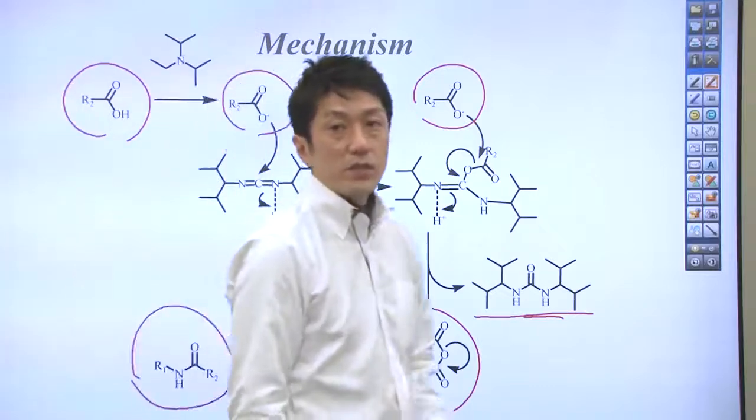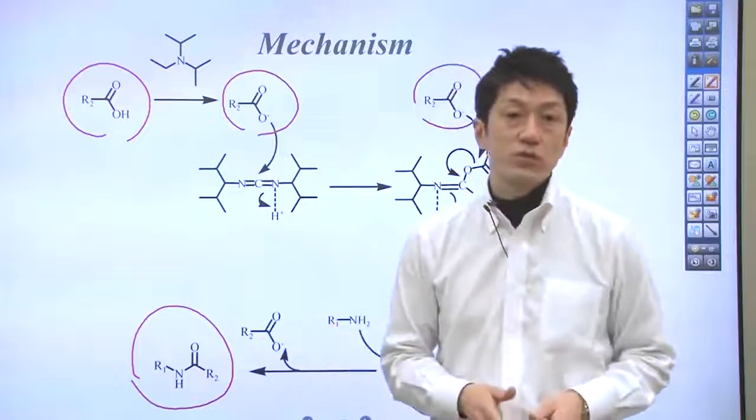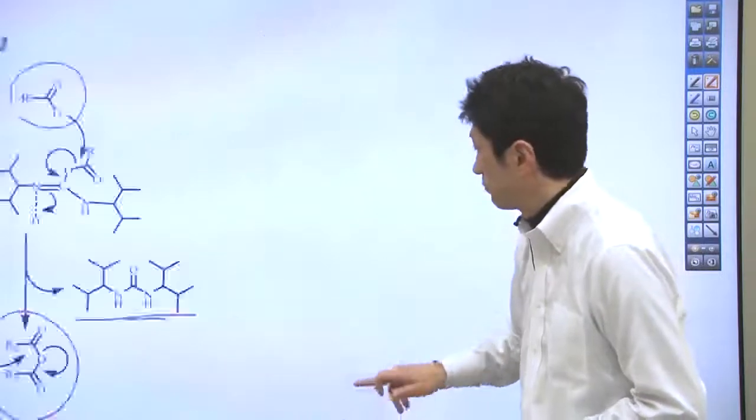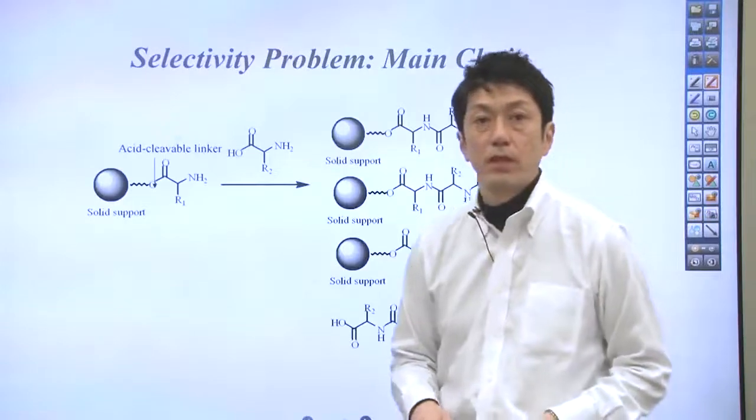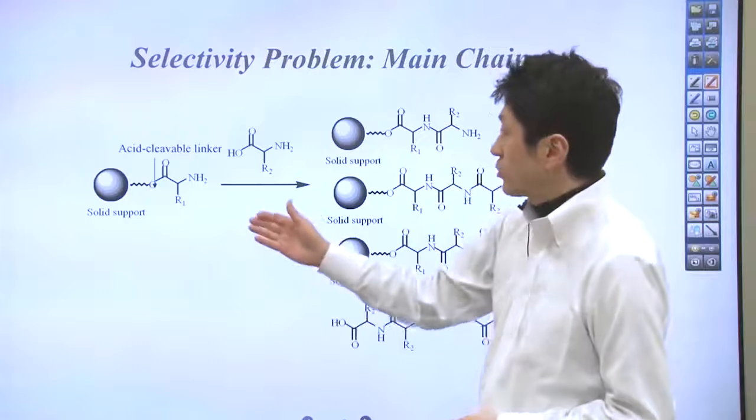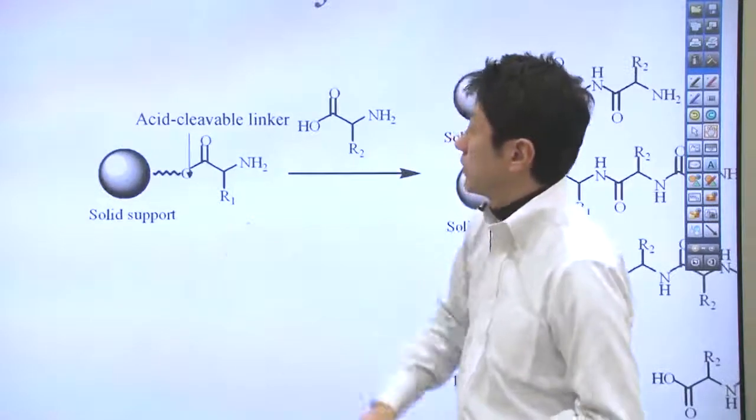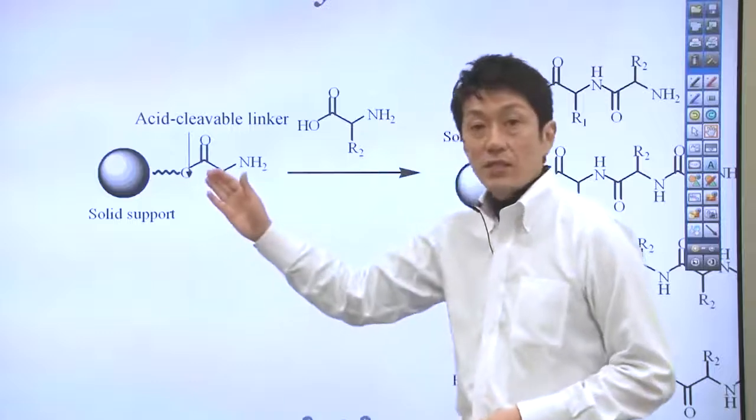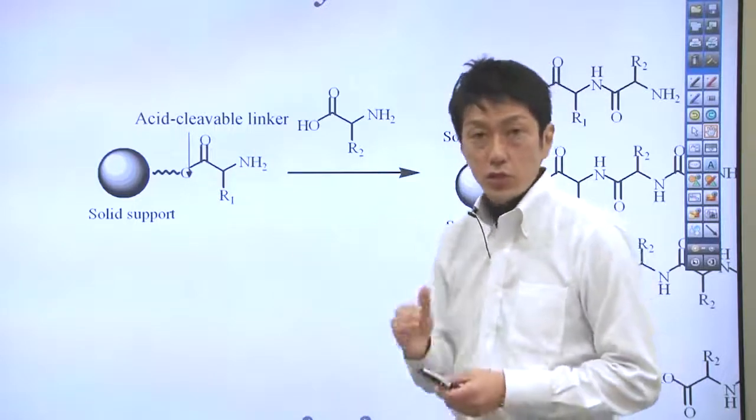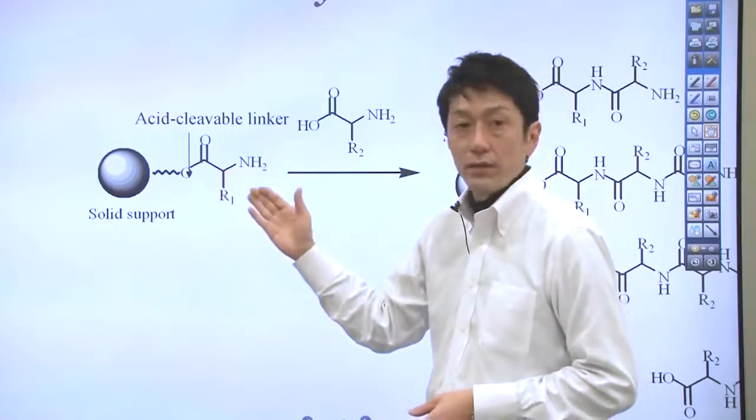In the solid phase peptide synthesis, you need to do this reaction on the solid support. Assume that the first amino acid is bound to a solid support or a bead. The acid cleavable linking group is used to ensure that you can recover the peptide from the solid support later.